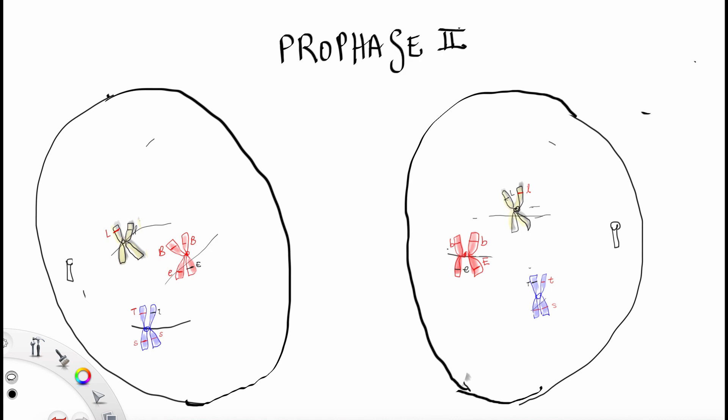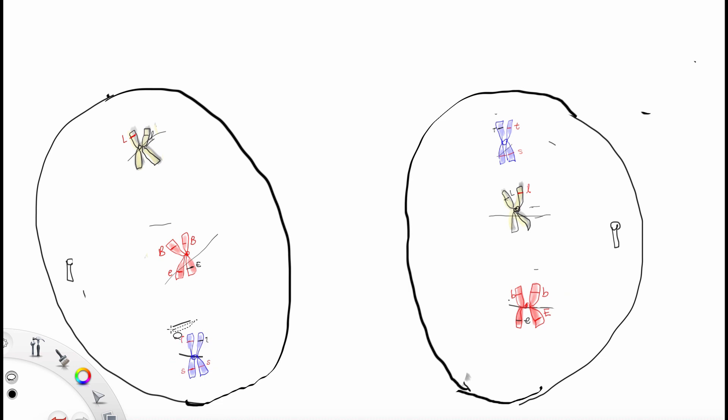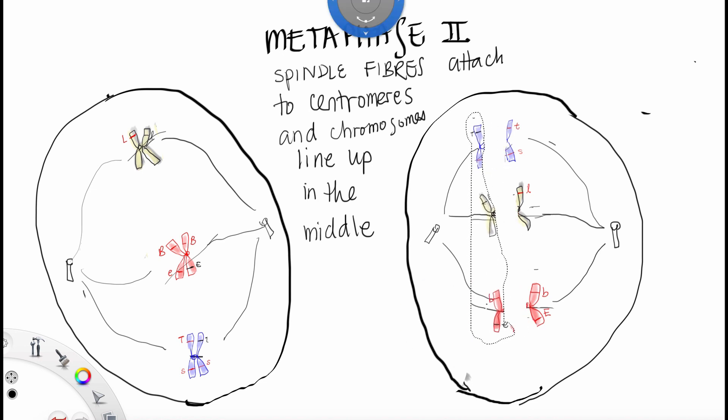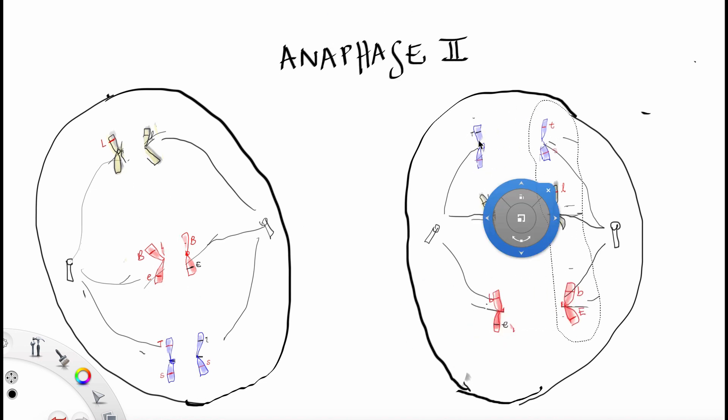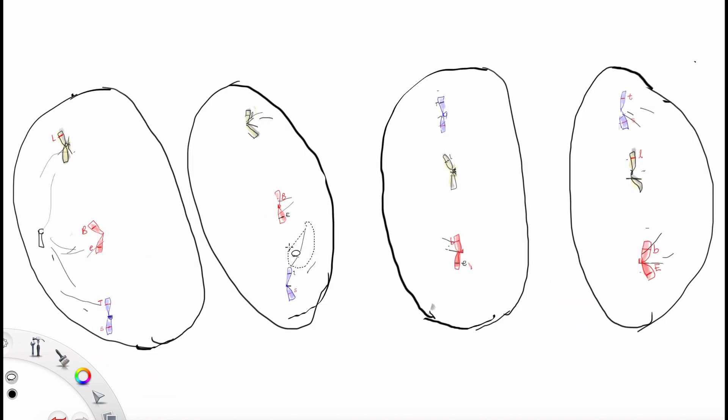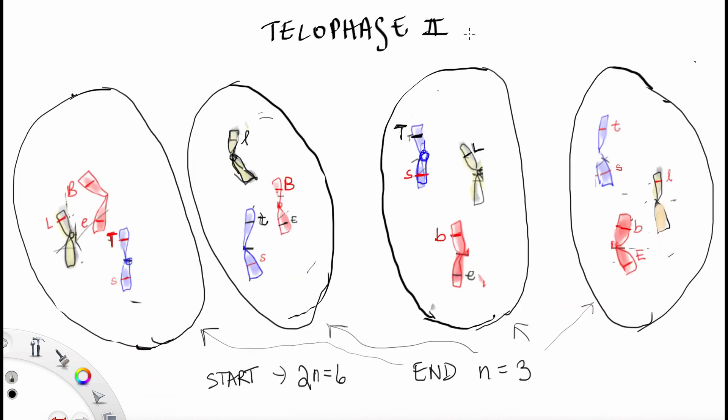Now we have prophase 2, where they get ready to do it all again. And now we have metaphase 2. The spindle fibers attach to the centromeres and the chromosomes line up in the middle. Anaphase 2. The chromatid sisters break apart. And finally, telophase 2, where we have 4 haploid cells.